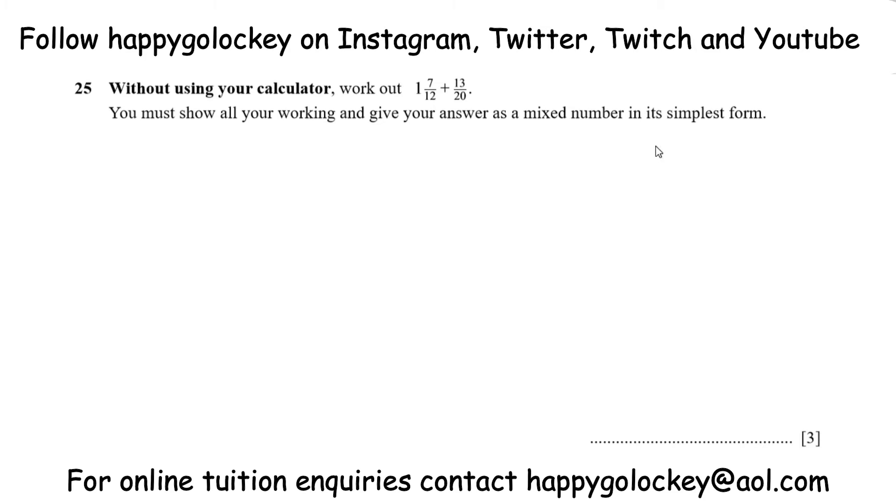Okay guys, back with the work solutions. The first thing you need to make a note of is you can't be using your calculator. So we're looking at 1 and 7 twelfths plus 13 twentieths. We've got to show all the working, and the answer has to be a mixed number, not an improper fraction, and it has to be simplified. That will probably get the final mark there.